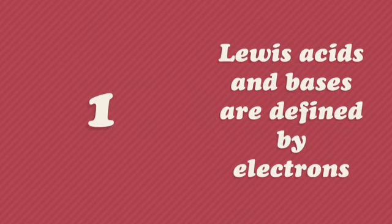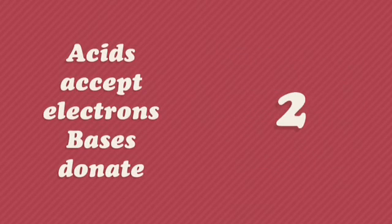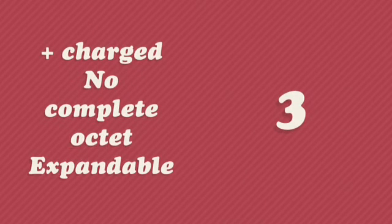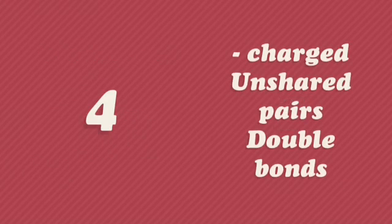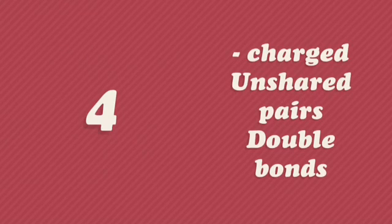To summarize: one, Lewis acids and bases are defined by electrons. Two, acids accept electrons and bases donate them. Three, anything positively charged, something without a complete octet, or anything with an expandable valence electron shell can be a Lewis acid. And four, anything negatively charged, any unshared pairs in the valence shells, and anything with a double bond can be a Lewis base.